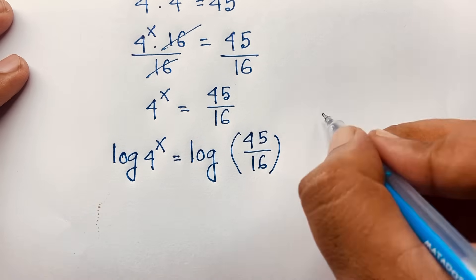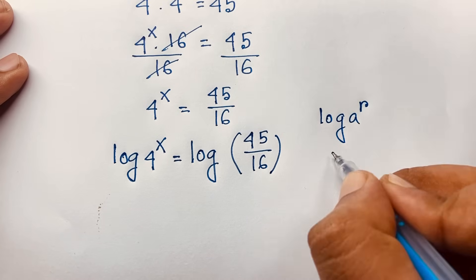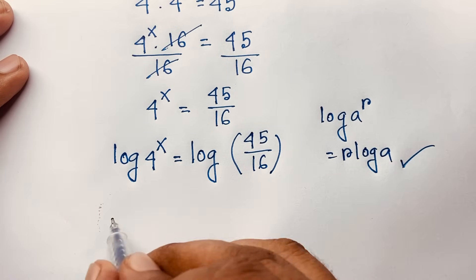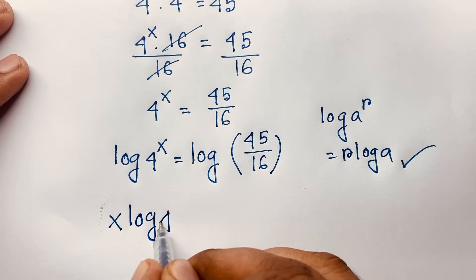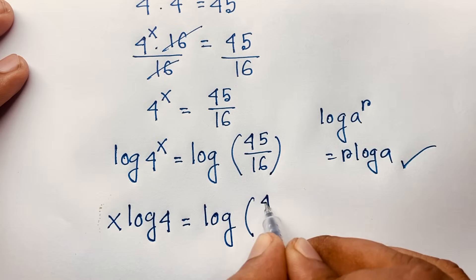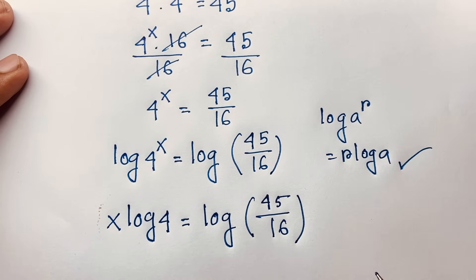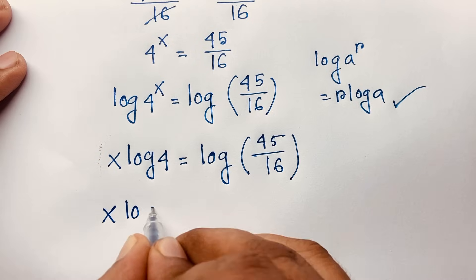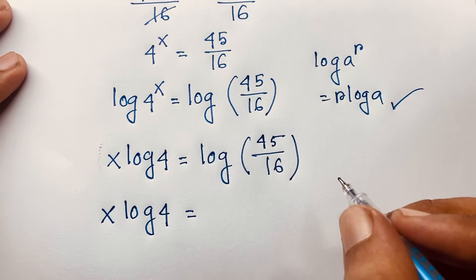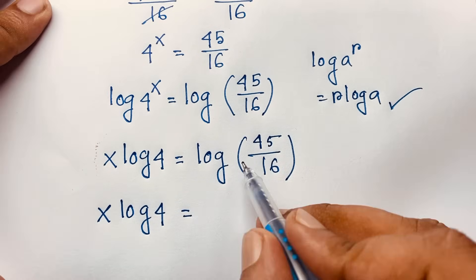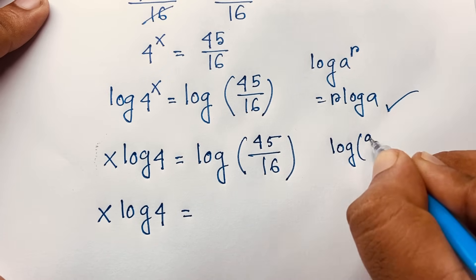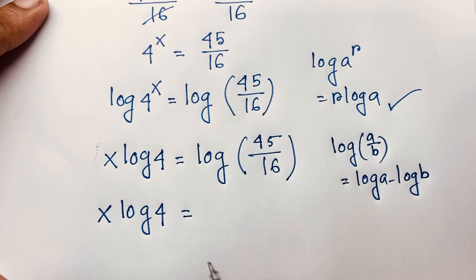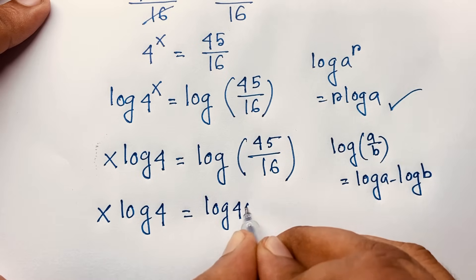Using the rule that log a to the power r equals r times log a, the x moves to the front: x log 4 equals log of 45 over 16. Then applying the quotient rule, log(a/b) equals log a minus log b, this becomes log 45 minus log 16.